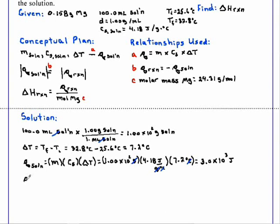We know that Q of the reaction is equal and opposite to Q of the solution, so that is negative 3.0 times 10 to the 3rd joules.